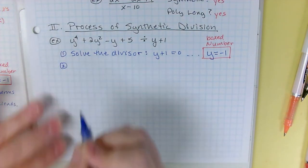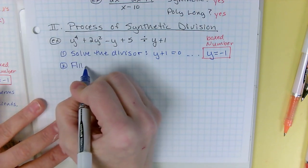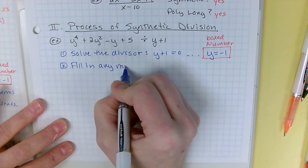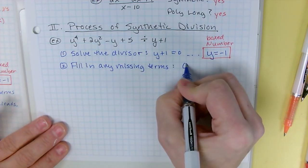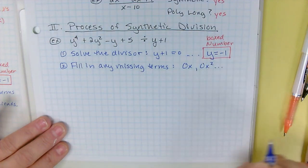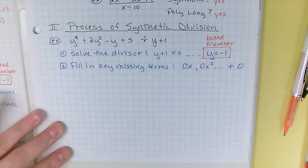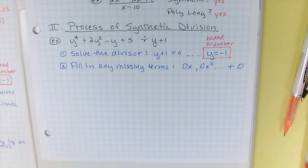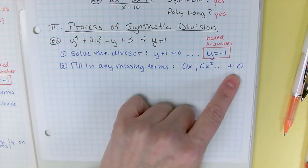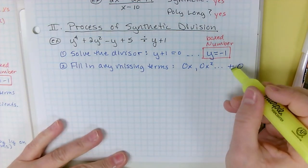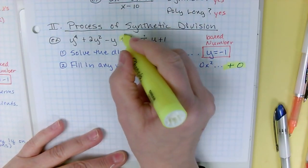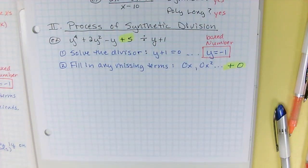Okay, number two, you need to fill in any missing terms. And that's where you're going to have like a 0x or a 0x². The other one you got to fill in is the end plus zero. And that's one that people forget on synthetic, that your last term has to be a number term. If it isn't, your answer will be incorrect. And that's the one people forget, is you've got to have a plus zero at the end plus a number. This one already has a plus five, so that requirement is met. If it is not, you have to sub that in.